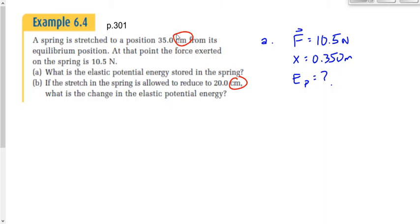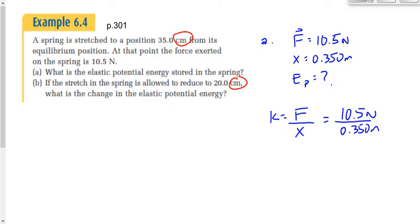I was thinking of starting with Ep equals one-half kx squared since we want to find Ep, but we'd still need to find k. So let's solve for k first using Hooke's Law. k equals F over x: 10.5 newtons divided by 0.350 meters gives us 30 newtons per meter.